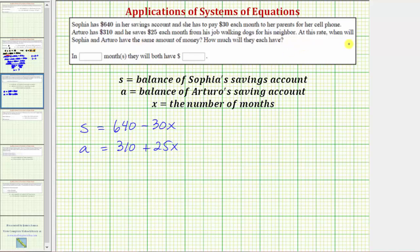Now we're asked to determine when will Sophia and Arturo have the same amount of money. Well that would occur when their balances are the same or when $640 minus 30x equals $310 plus 25x.